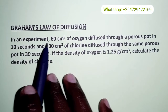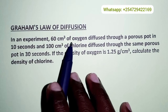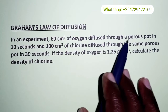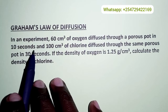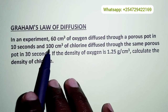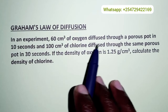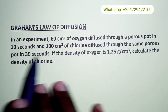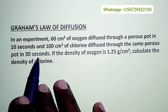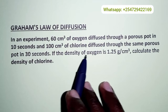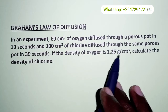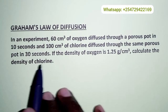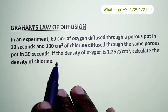In an experiment, 60 cubic centimeters of oxygen diffused through a porous pot in 10 seconds, and 100 cubic centimeters of chlorine diffused through the same porous pot in 30 seconds. If the density of oxygen is 1.25 grams per cubic centimeter, calculate the density of chlorine.